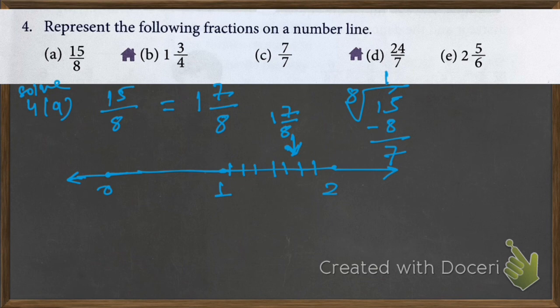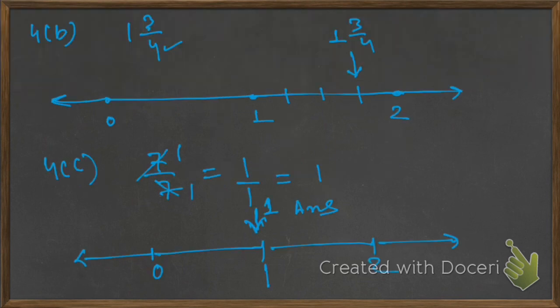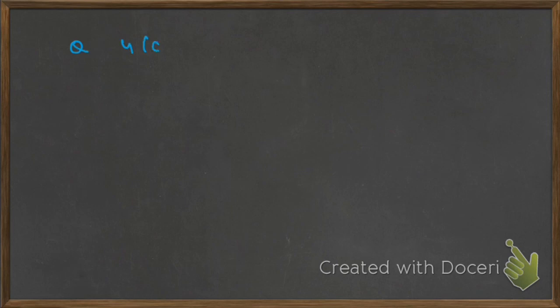Last question 4C: 7 upon 7 means 1, because 7 ones are 7, meaning 7 upon 7 equals 1. Suppose this is 0, this is 1, this is 2 — this will become your 1. That is the answer. Questions C, D, and E of question 4 are your homework. See you next time.